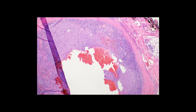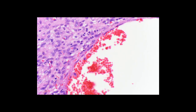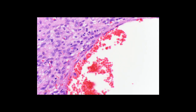Moving to another area of the tumor, we can focus on the central cystic space that is often filled with blood. At higher power, you can see that this space is lined by a flattened layer of tumor cells. These are not true endothelial cells — they are just flattened tumor cells — so this is a pseudo-vascular space and not a true vascular space.